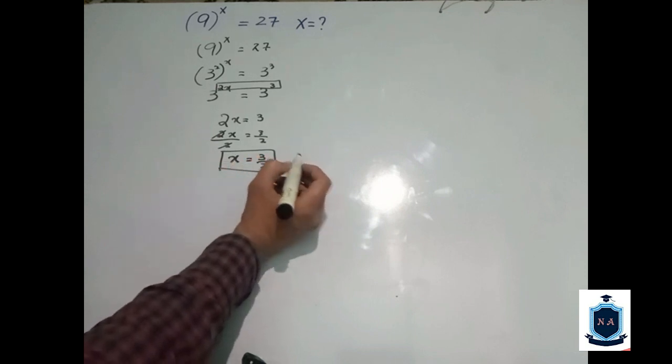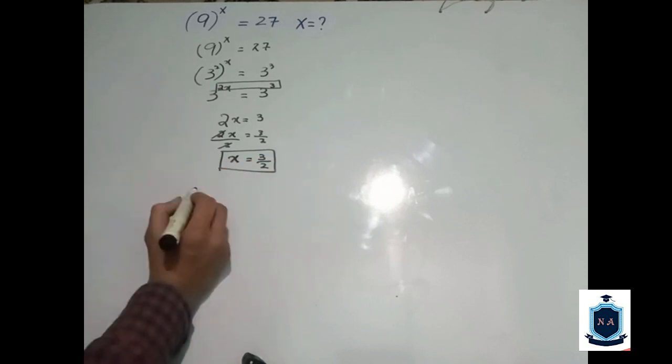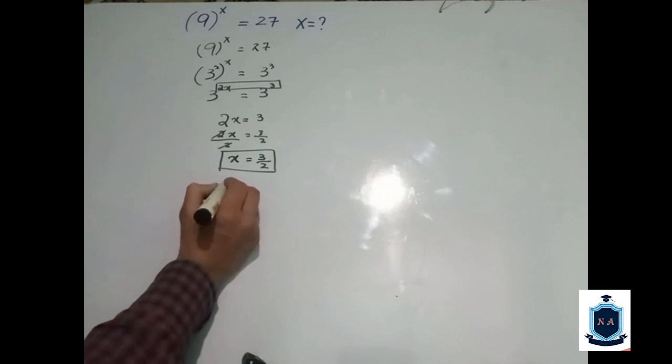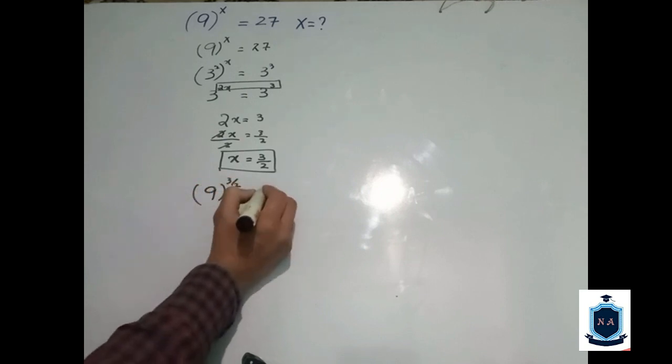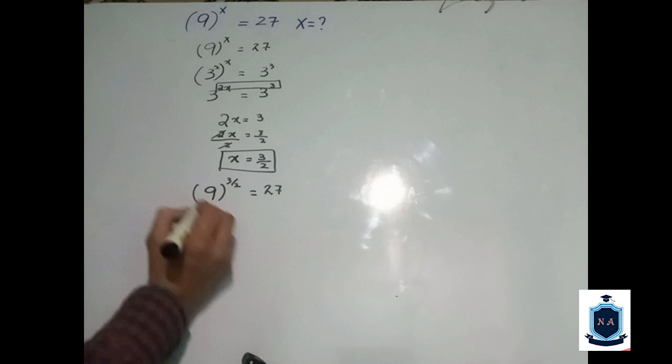If you want to verify the answer, we will put the value in the above equation. It is 9 power 3 upon 2 equal to 27. We will get 9 is the square of 3, so 3 square, 3 divided by 2 the power, and 27.